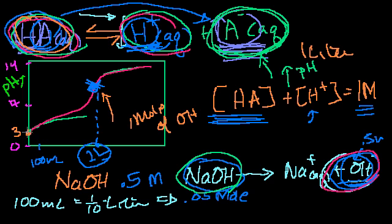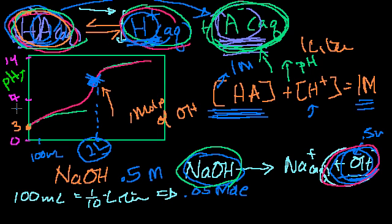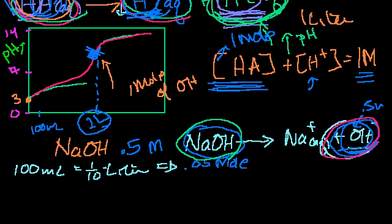So if you had 1 mole of the original acid and you know it's a 1 liter solution, then you know the original concentration was 1 molar. The concentration of HA plus the initial equilibrium hydrogen equals 1 molar — and for most weak acids, the HA term dominates, so this essentially tells you the initial concentration of your weak acid.